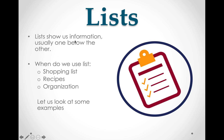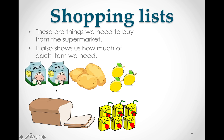Lists show us information usually one below the other. If we look at this picture, the information will be written on one line and on the next line thereafter, below each other. When do we use a list? We use it when going shopping, making a recipe, or simply to organize what we would like to do in a day. Let us look at some examples.